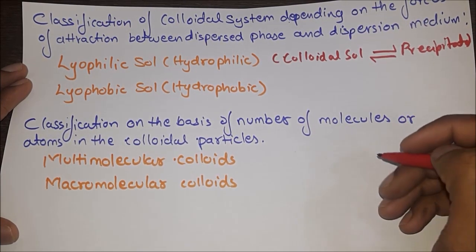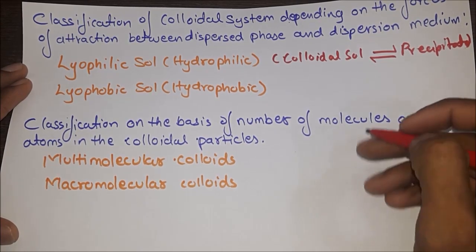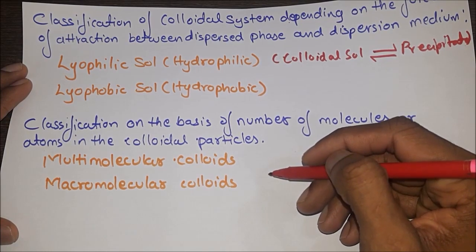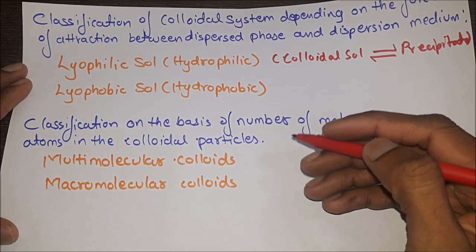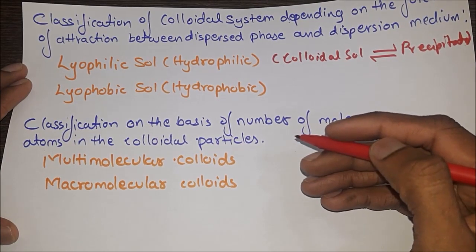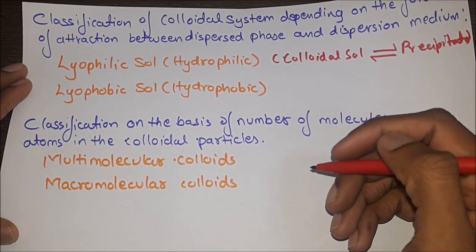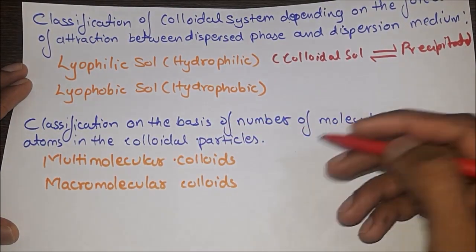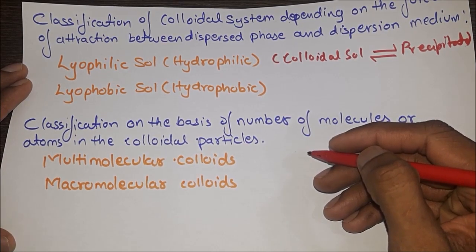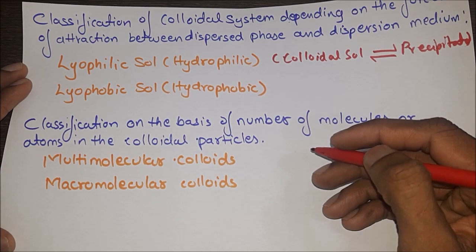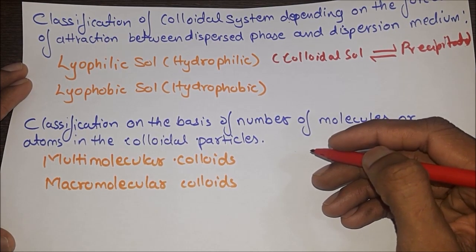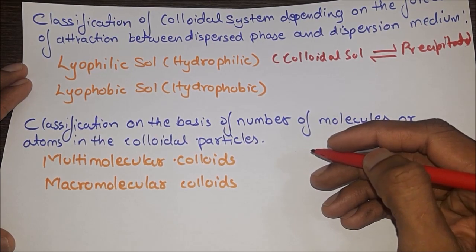Classification on the basis of the number of molecules or atoms in colloidal particles: there are two types — multi-molecular colloids and macromolecular colloids. The colloidal systems are classified depending upon the number of molecules or atoms involved in colloidal particles. In multi-molecular colloids, the colloidal particles are aggregates of numerous atoms or molecules — bigger than molecules of true solution but smaller than particles of suspension. Examples: gold sol, silver sol, and sulfur sol.